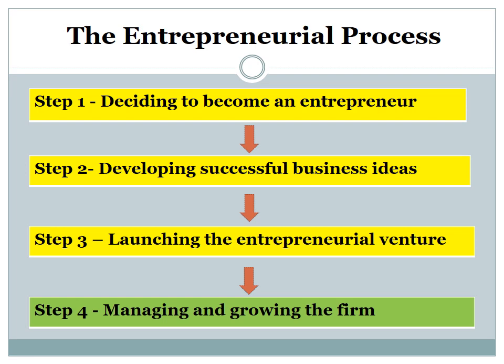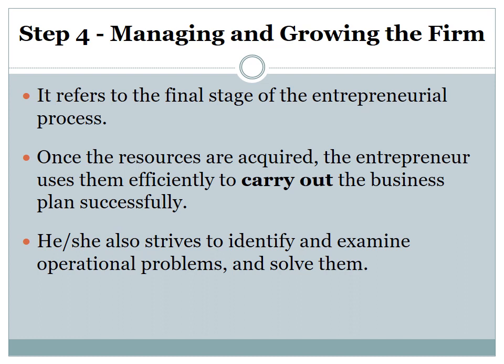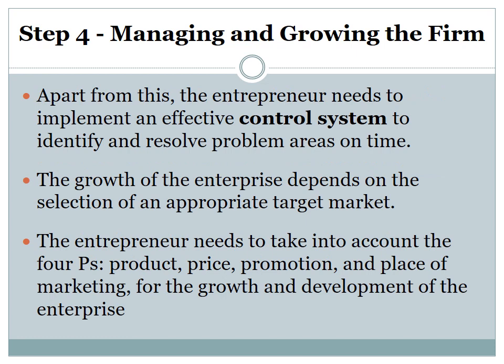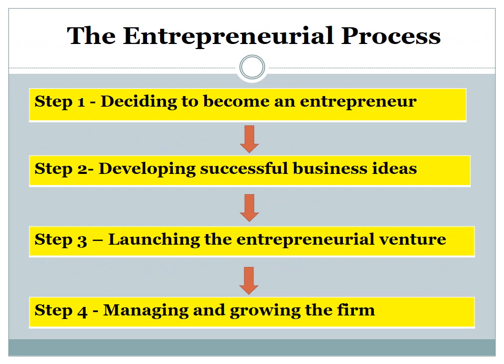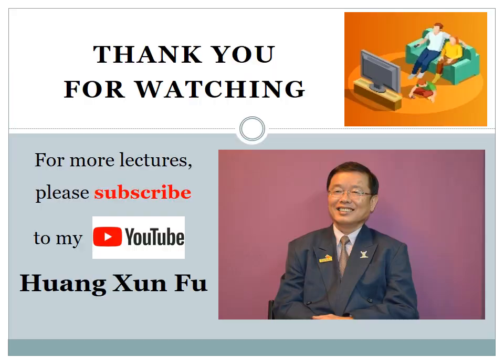Having launched the entrepreneur venture, the final step is managing and growing the firm. This refers to the final stage of the entrepreneur process. Once the resources are acquired and the entrepreneur uses them efficiently to carry out the business plan successfully, he or she also strives to identify and examine operational problems and solve them. The entrepreneur needs to implement an effective control system to identify and resolve problem areas in time. The growth of the entrepreneur depends on the selection of an appropriate target market. The entrepreneur needs to take into account the four P's — product, price, promotion, and place — of marketing for the growth and development of the enterprise. With this, we come to the end of the four steps of the entrepreneurial process.